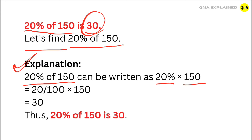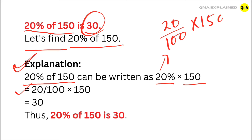20% can be written as 20 upon 100. So we have 20 upon 100 multiplied by 150. Let's solve it. Cancel out the zeros — we have 2 multiplied by 15, which is equal to 30.